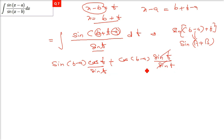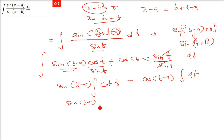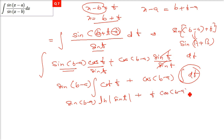sin(t) in the denominator cancels with the sin(t) in the second term. sin(b−a) and cos(b−a) are constants with no variable t or x. So sin(b−a) can be taken outside; cos(t)/sin(t) is cot(t). cos(b−a) multiplies ∫dt, giving t. The integral becomes sin(b−a)·ln|sin(t)| + cos(b−a)·t + C.